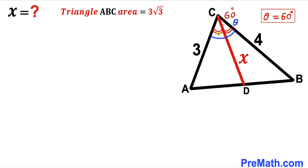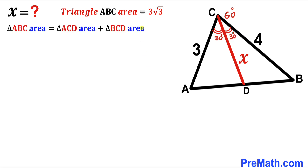Since CD is the angle bisector of angle ACB, angle ACD is half of 60 degrees, which is 30 degrees, and likewise angle BCD is 30 degrees as well.